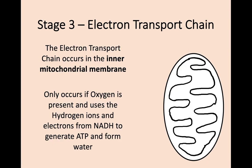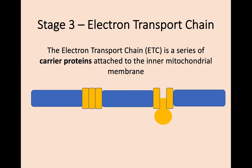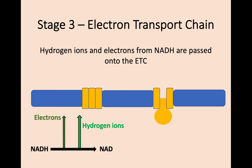The electron transport chain takes place in the inner mitochondrial membrane — more specifically, along a series of carrier proteins attached to that membrane. As with the citric acid cycle, this can only take place if oxygen is present. In this process we require the NADH generated in both glycolysis and the citric acid cycle. The hydrogen ions and electrons from the NADH are then passed on to the electron transport chain.